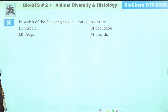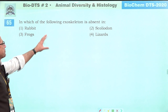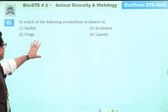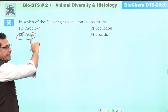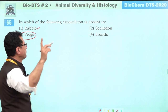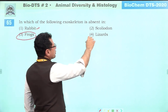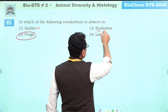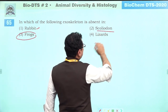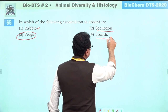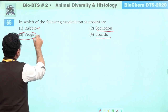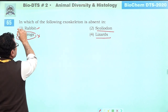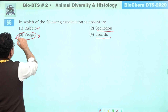In which animal is exoskeleton absent? Exoskeleton is absent only in amphibians. Rabbits have hair (mammals), Scoliodon has scales, lizards have scales and claws. Frogs (amphibians) do not have exoskeleton. Answer is third.